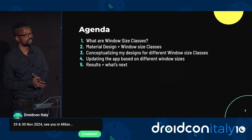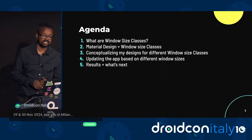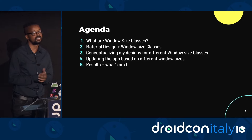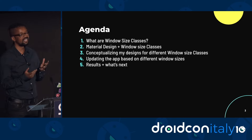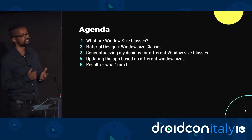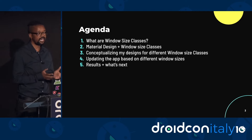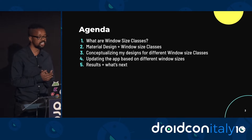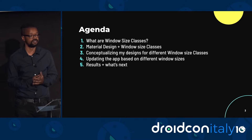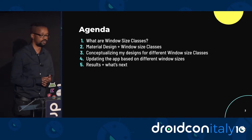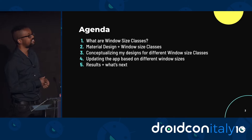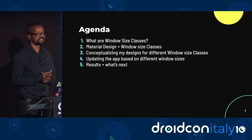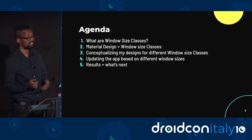The agenda for this talk: we're going to be talking about what are window size classes, material design and window size classes and how the two work together, conceptualizing my designs for the different window size classes, updating the app based on these different window size classes, touching on the code changes as well as the visual overview, and finally, the next steps — does the journey to supporting window size classes end here, or does it continue?